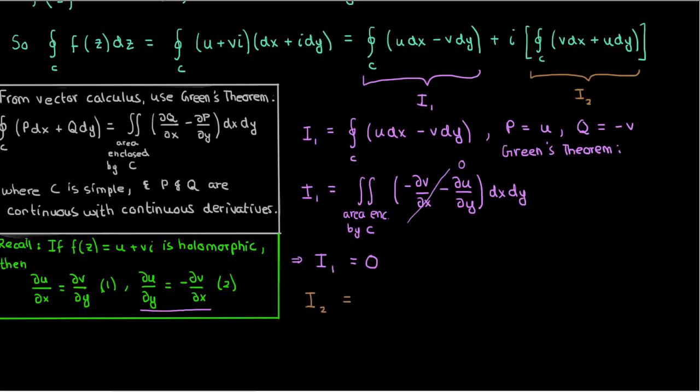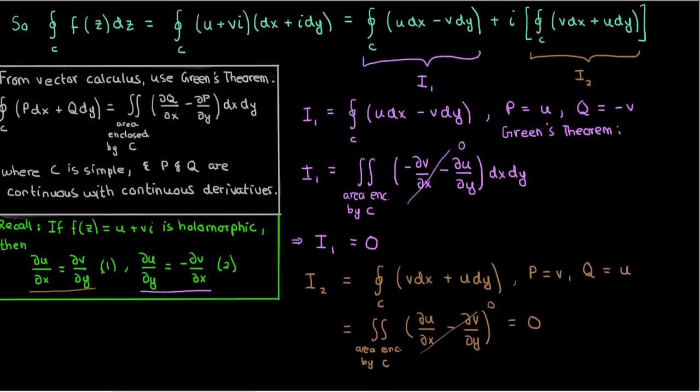We can use the same argument on the integral I₂. When we apply Green's theorem on this integral, it just becomes the double integral over the area enclosed by c of du/dx minus dv/dy. Again, since the Cauchy-Riemann relations hold true, the integrand just cancels out and it follows that I₂ is also 0.